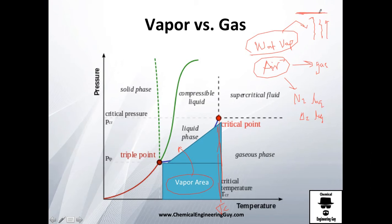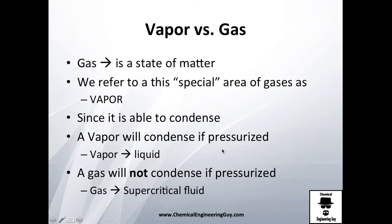So hopefully you get the idea on vapor and gaseous phase. The only difference is the critical point. If the temperature is before that critical point then it's a vapor, if it's after then it's a gas. And even though gas technically speaking is the state of matter, we will refer to this special area before that critical temperature as vapor.